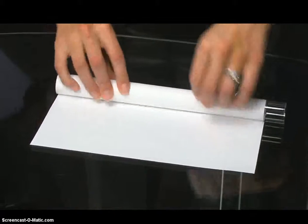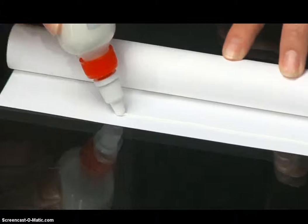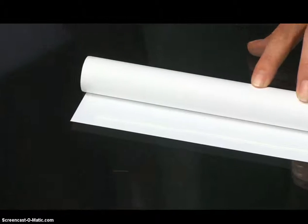When the tube is approximately one inch from the end of the paper, stop and apply a narrow bead of glue along the edge of the paper.